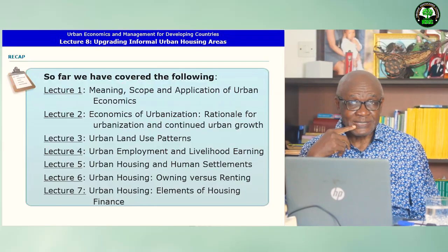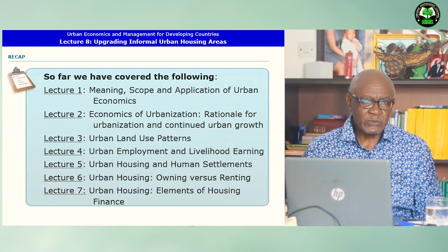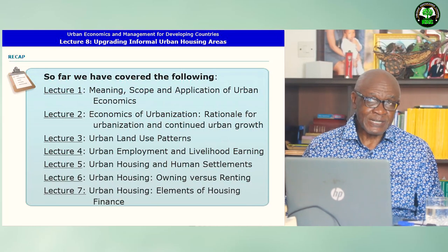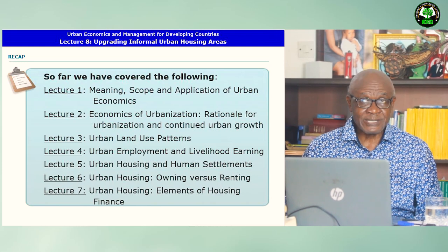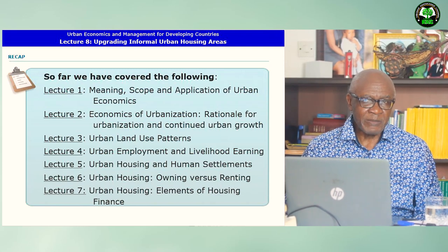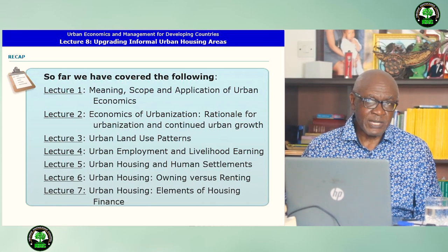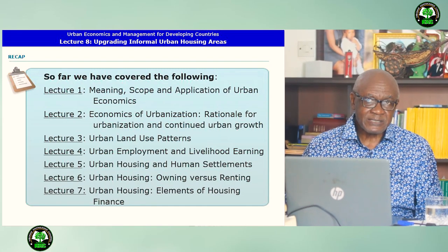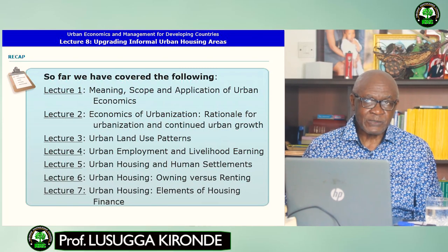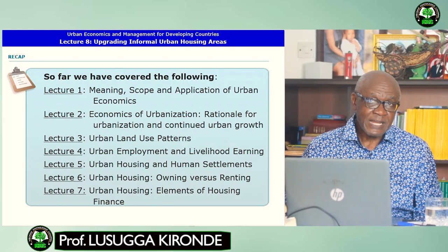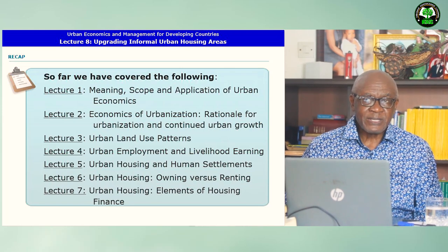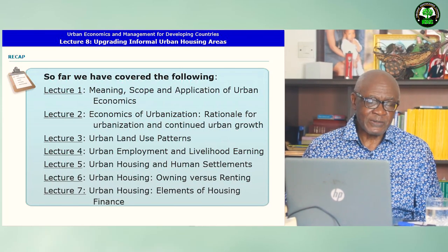So far we have covered a number of areas. In lecture one we looked at the meaning, scope and application of urban economics. In lecture two we looked at economics of urbanization and the rationale for urbanization and continued urban growth. In lecture three we looked at urban land use patterns. In lecture four we looked at urban employment and livelihood earning activities. In lecture five we looked at urban housing and human settlements. Lecture six we looked at urban housing and owning versus renting. Lecture seven we looked at urban housing with a special focus on elements of housing finance.